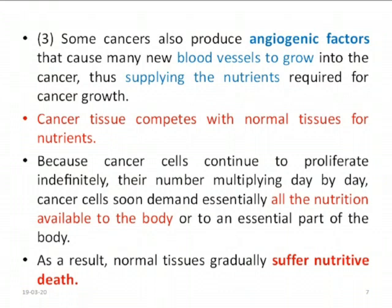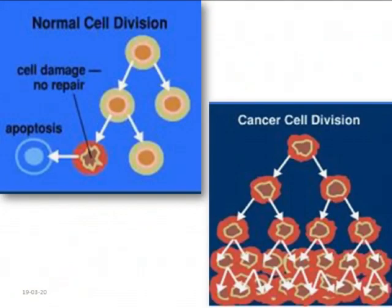Cancer tissue competes with normal tissue for nutrients. Nutrients are limited in the body, and normal cells also need them, but cancer cells are greater in number and require more. Here I'm showing two pictures — one of normal cell division and one of cancer cell division. In normal cell division, when a cell is damaged, it undergoes either apoptosis or repair. But in cancer cell division, you can see that a large number of cells continue growing uncontrolled.